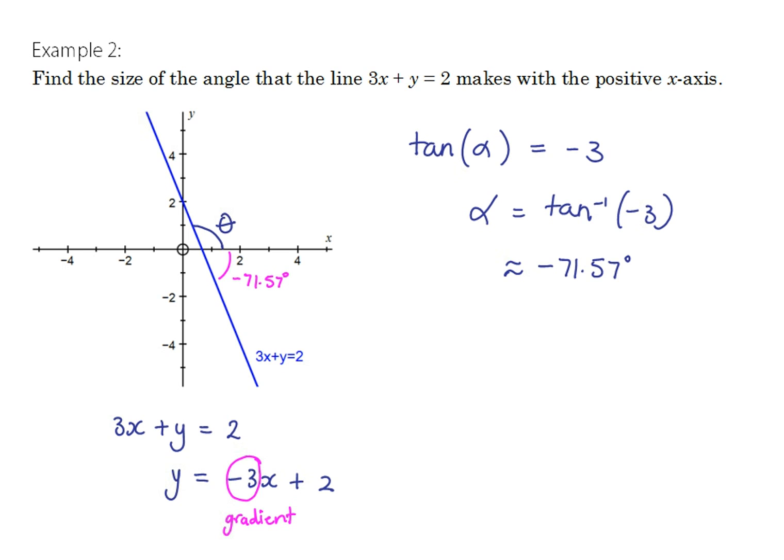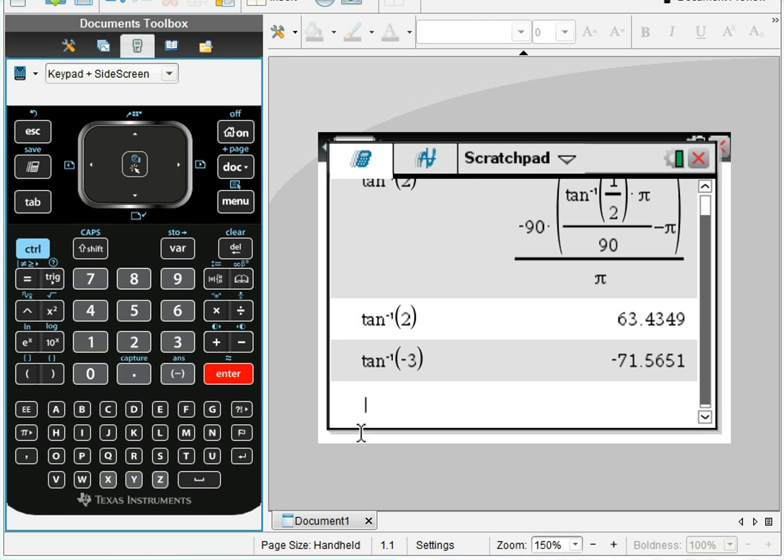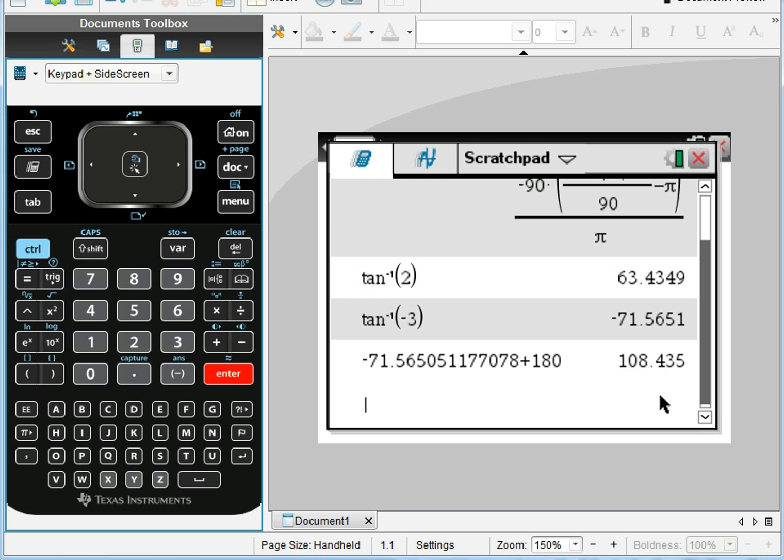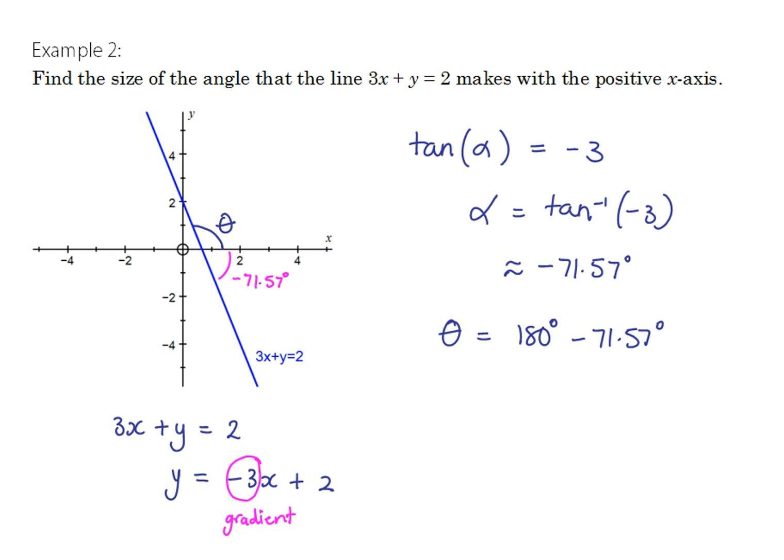And so we can calculate theta because we know that theta and 71.57 degrees must add up to 180 degrees since these two angles form a straight line. So theta therefore is 180 degrees minus 71.57 degrees. So with my calculator, this is a fairly easy calculation to make because my previous answer was negative 71.57 degrees. So I want 180 minus 71.57 or negative 71.57 plus 180. So I simply need to add 180 degrees here. And I get my answer of 108. Now be careful about the rounding there. I'm just going to move that down to the next line so you can see it. So it actually is 108, if we're talking two decimal places, 108.43 degrees. So 108.43 degrees is the size of the angle that the line makes with the positive x-axis.